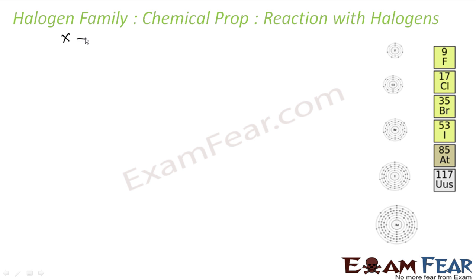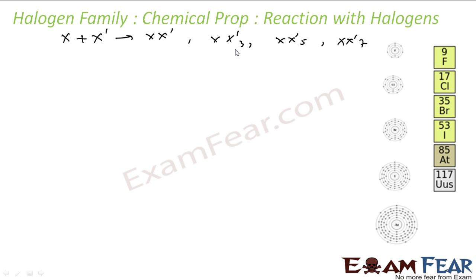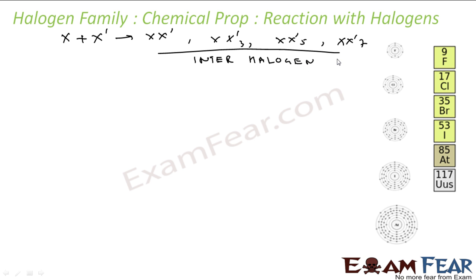So when one halogen reacts with another halogen, they form an interhalogen compound of the form XX, or XX3, or XX5, or XX7. These are all interhalogen compounds.